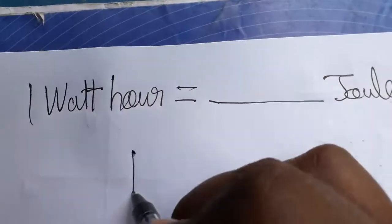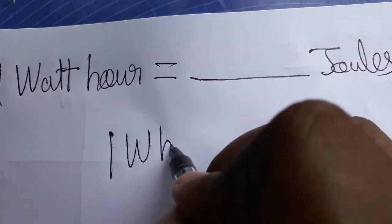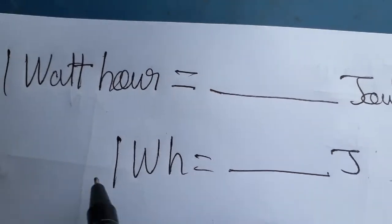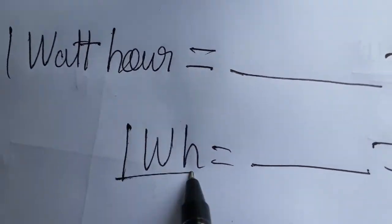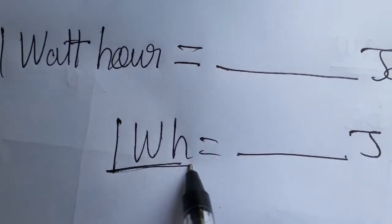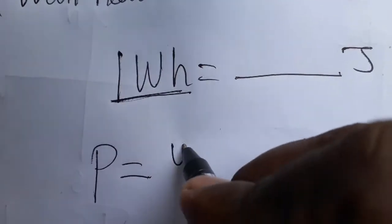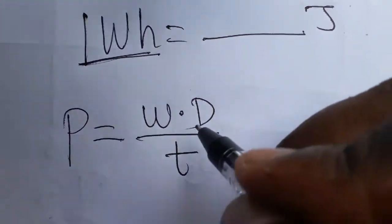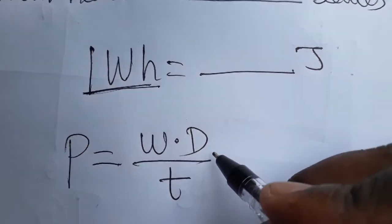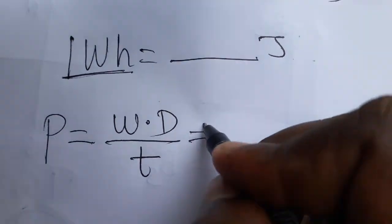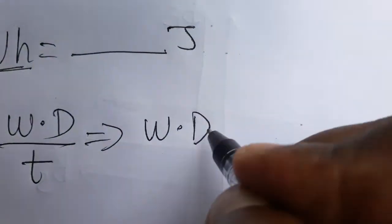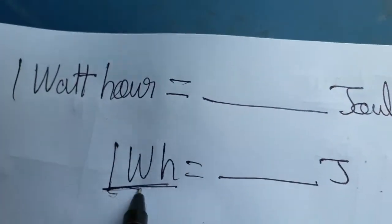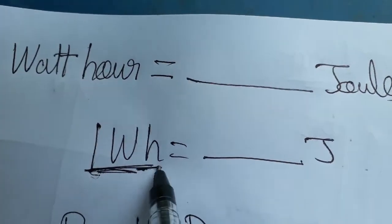Students, today I am going to teach you: one watt hour is equal to how many joules. First, we should know what a watt-hour is. Power is equal to work done divided by time, so work done is equal to power into time. Here, power is given as watts and time is given as hours.